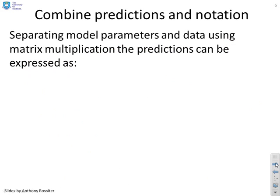What do we do next then? We want to separate model parameters and data. At the moment, they're all mixed together. I've got A xk and A B uk and all sorts of things like that. And I want to separate the model parameters from the input, output and states.